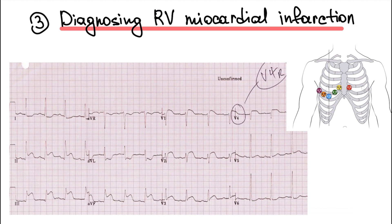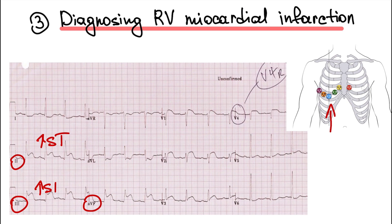Diagnosis of right ventricular myocardial infarction is very difficult on ECG. We need to use special leads for this, such as V3R and V4R. If we see an inferior myocardial infarction with ST segment changes at leads II, III, and aVF, we need to record an ECG with additional leads V3R and V4R for right ventricular myocardial infarction diagnosis. Clinically, this patient will be hypotensive with ischemia symptoms.